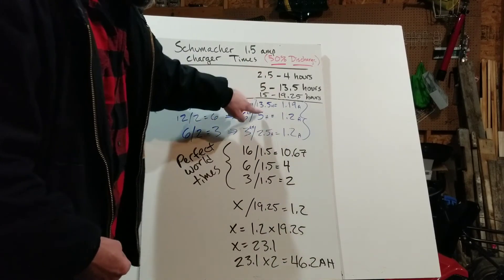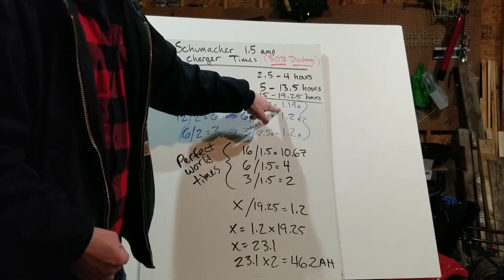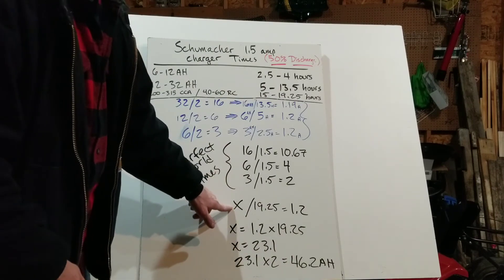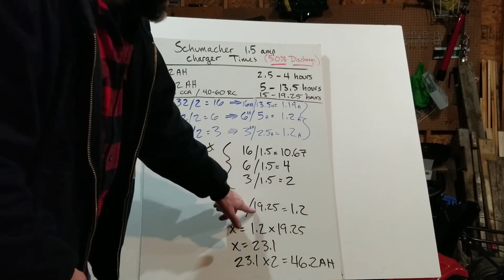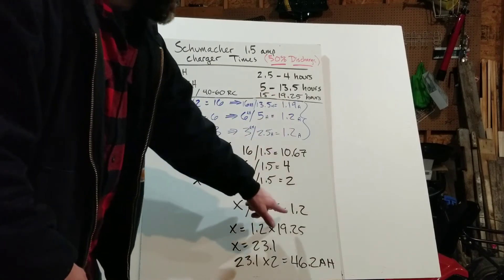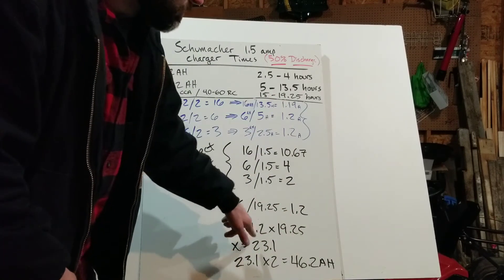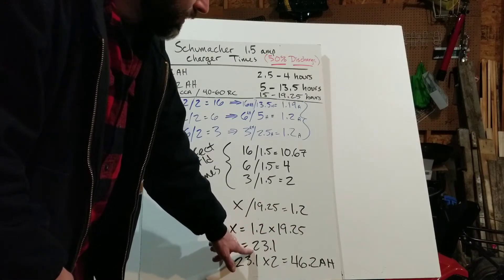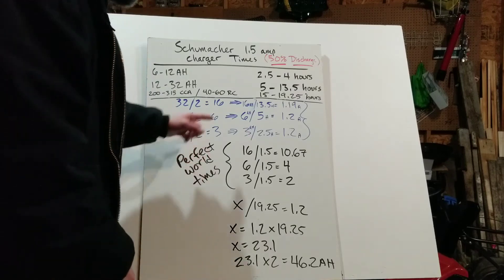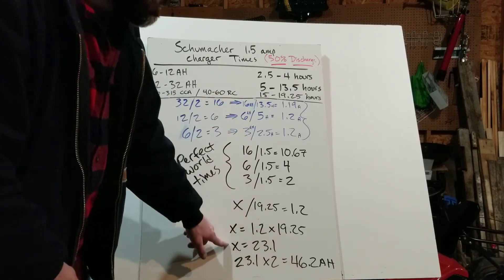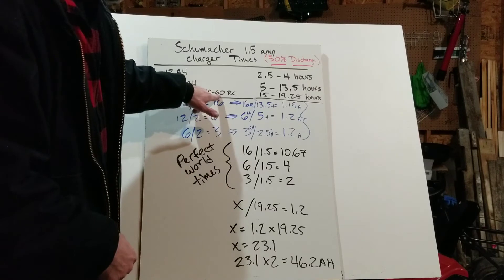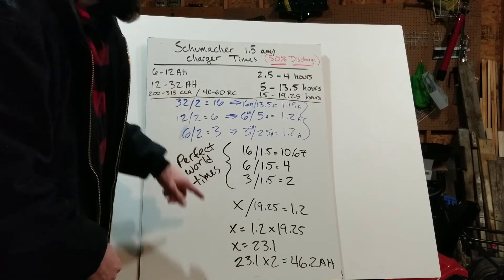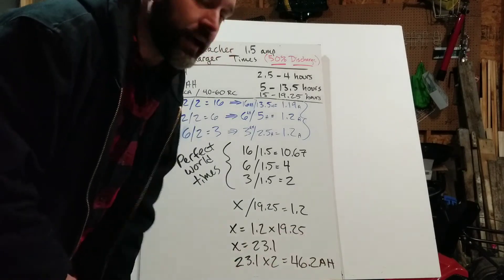So if I know that whatever amp hours need to be replaced goes here and you divide it by the total hours of charge here, but the number is always going to give me 1.2, it's pretty simple. We just say X, we're solving for X, divided by 19.25 charging hours, and it should equal 1.2. We move the 19.25 over, multiply by 1.2, that gives us 23.1 for X, but we've got to remember this was 50%. So if we double it, it's saying that this car battery with 60 reserve capacity or 315 cold cranking amps is equivalent of 46.2 amp hours.